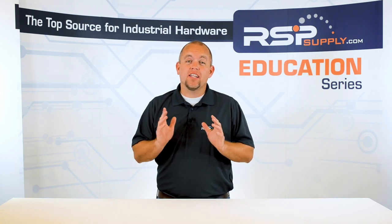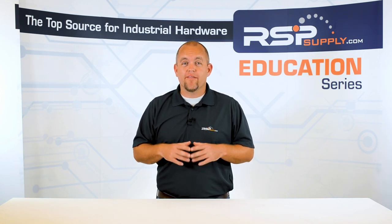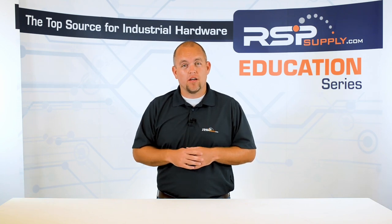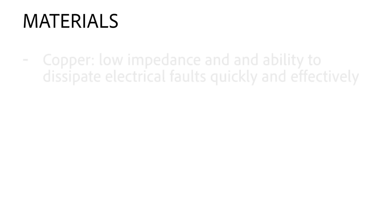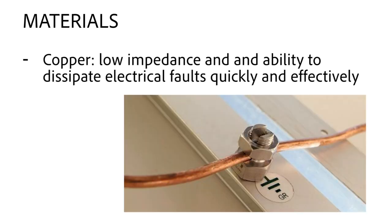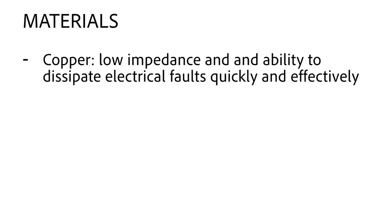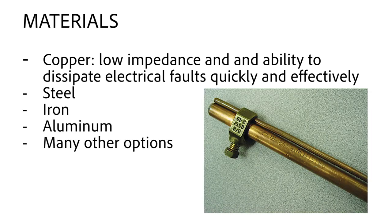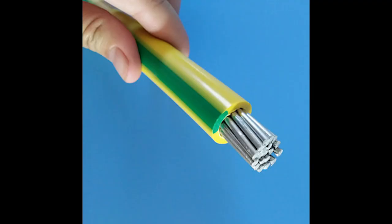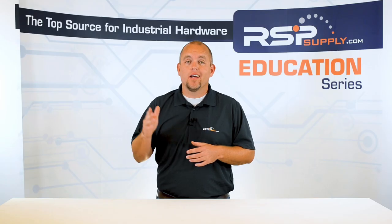In almost all electrical grounding systems, a variety of materials can be used. The most common material in these types of systems is copper because of its low impedance and its ability to dissipate electrical faults quickly and effectively. Other metallic materials are also very common, such as a wide variety of steel, iron, aluminum, and many other options. All of these conductive materials can be used in the various electrode systems that we will discuss.